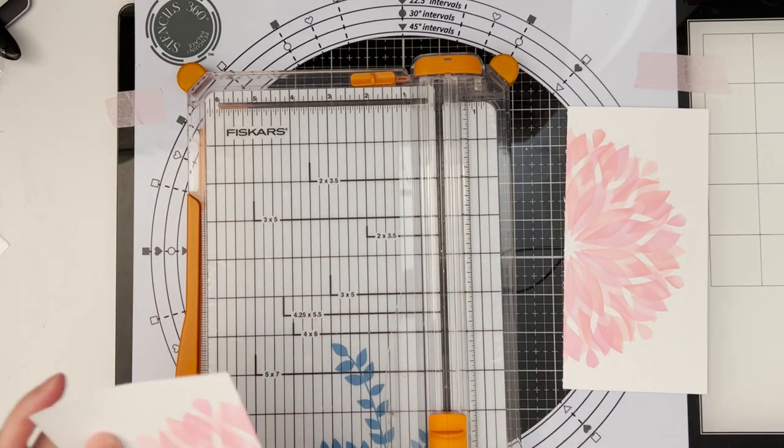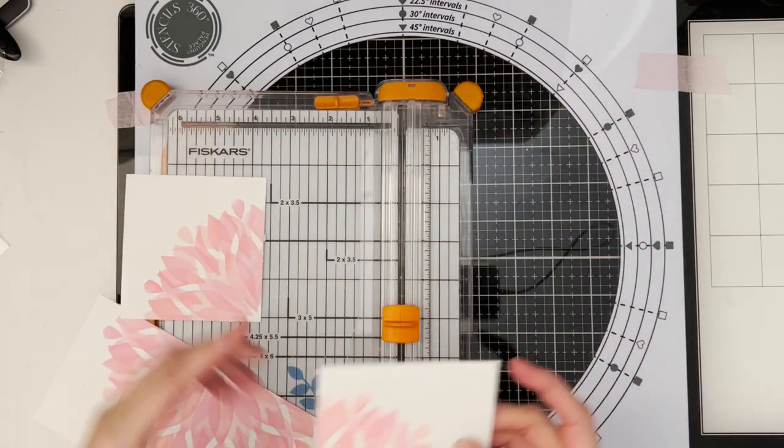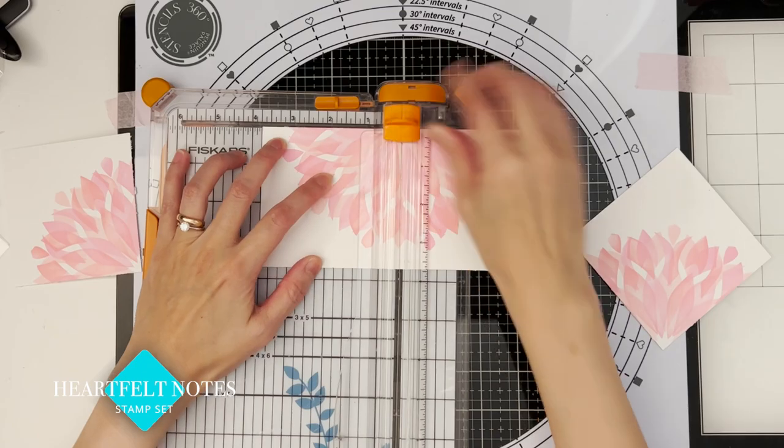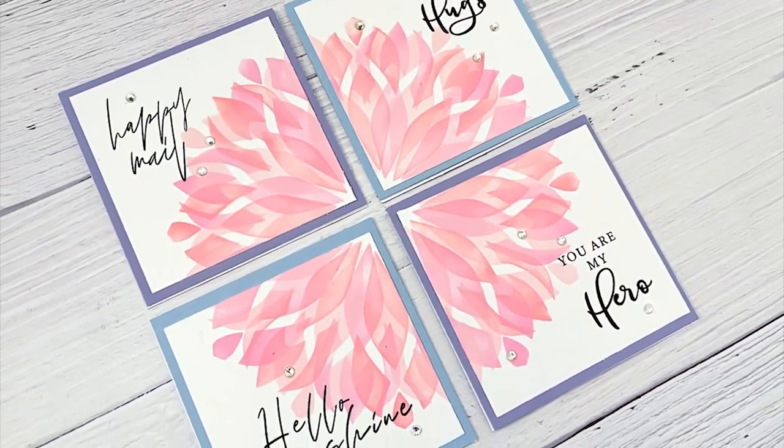Now let's turn these backgrounds into cards. I cut the pink background into quarters, then stamped out a different sentiment on each one and added a card basis to make four cards, each measuring four inches by four inches.